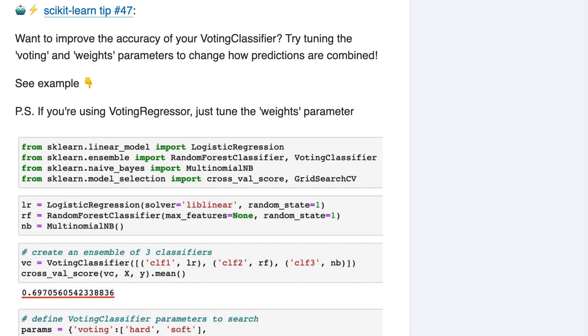Scikit-learn tip number 47. Want to improve the accuracy of your voting classifier? Try tuning the voting and weights parameters to change how predictions are combined.